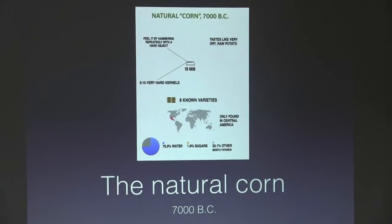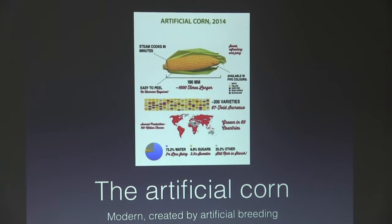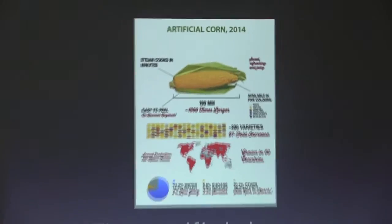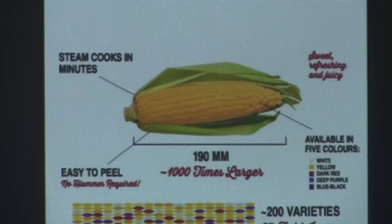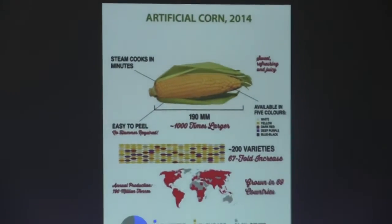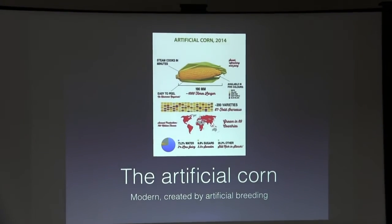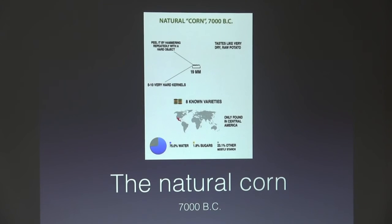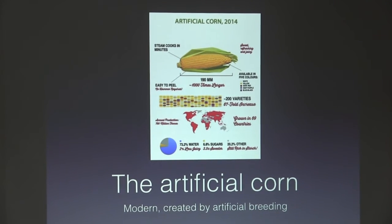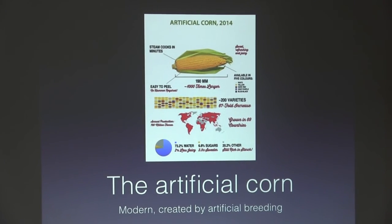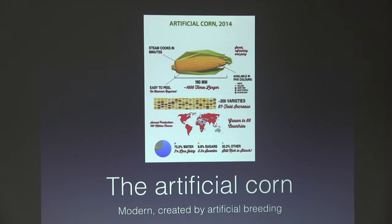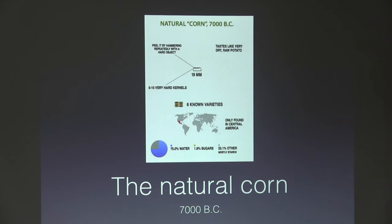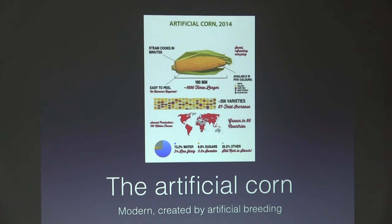Now if we look at our artificial corn — this thing steam cooks in just minutes. It's sweet, refreshing, and juicy. It's available in five different colors and is 190 millimeters, around 1,000 times larger than its predecessor. It's also very easy to peel — no slamming required, you just use your hands. There are over 200 different varieties of artificial corn, a 67-fold increase, and while natural corn was only found in one country, it's now found in 69 different countries. These are 73.2% water, 6.6% sugars, and 20.2% other.